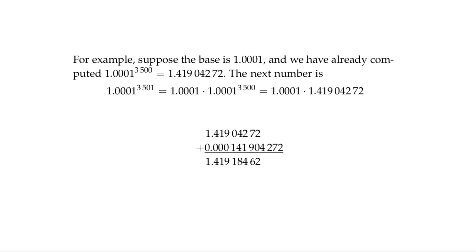Going from one number to the next is not a full multiplication — it's a very simple addition, where you know exactly which two numbers to add. Ingenious. Now, if you do this for a while, rounding errors accumulate and will overwhelm the precision you're striving for. The way to guard against that is to carry more digits than you need — carrying two extra digits is actually good enough to combat rounding error. You also need intermediate checks, but in principle each step requires only addition.